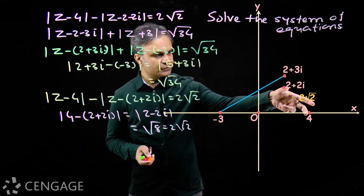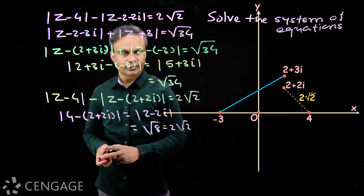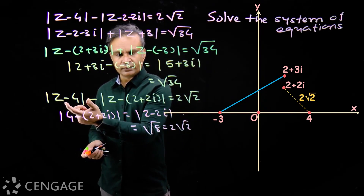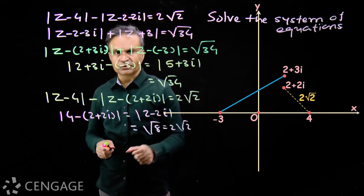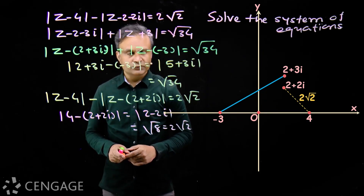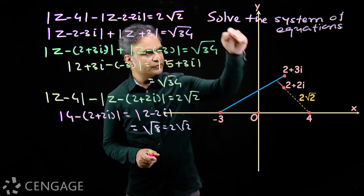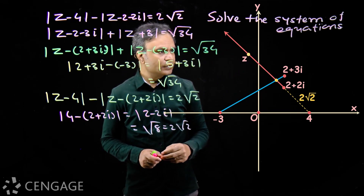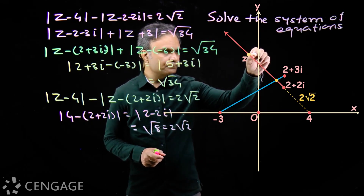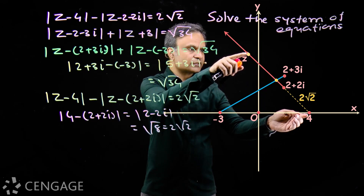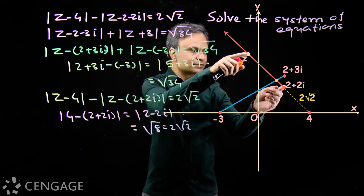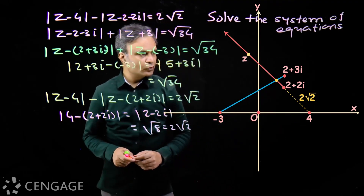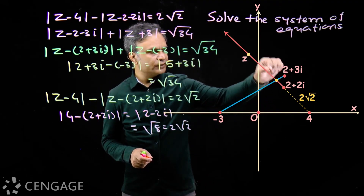The distance between these two complex numbers is 2 root 2. Since modulus of (z minus z₁) minus modulus of (z minus z₂) equals modulus of z₁ minus z₂, and this difference is positive, z will lie on the ray extending beyond the point 4 away from 2 plus 2i. For any point z on this ray, this distance minus that distance equals the distance between the two fixed points. So the locus is this ray.